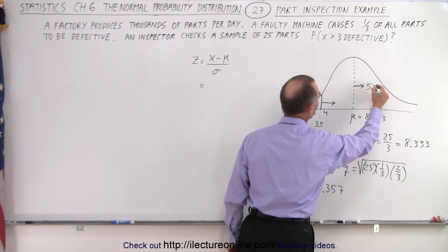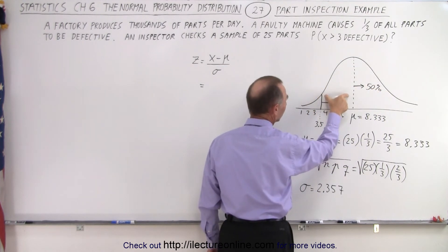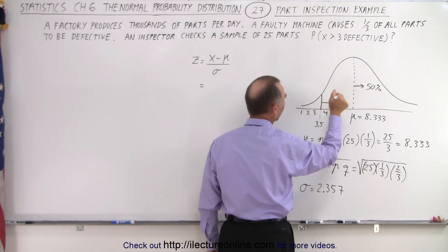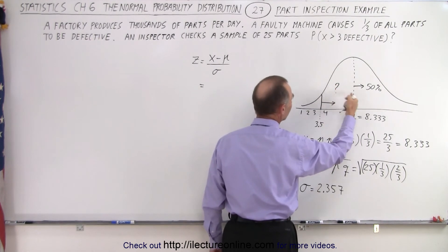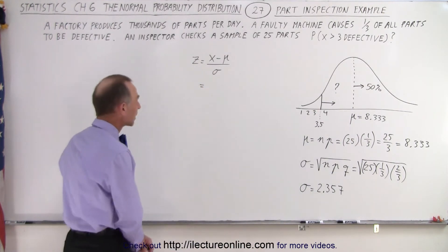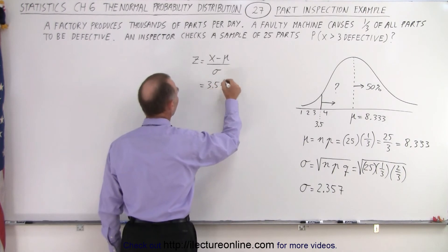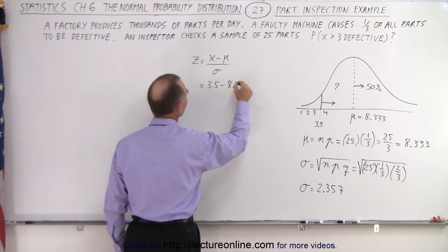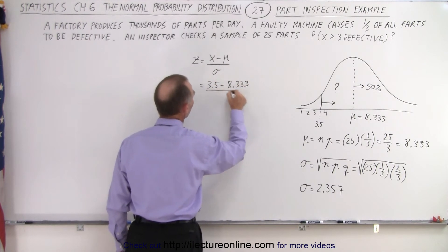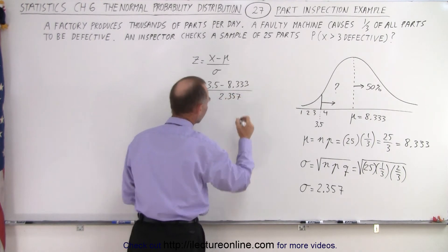So what we're going to do is obviously we know that the region to the right of the mean represents 50%. This represents 50%, so what we're trying to do is find this minus that. So this is the region that we're trying to find. We already know that that region is 50%. All right, so we pick 3.5 minus the mean, which is 8.333, divided by sigma, which is 2.357.